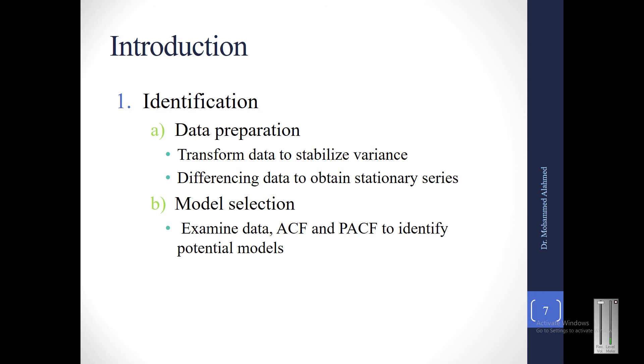First step, identification. That involves part A and B. First is data preparation. In that we basically transform the data to stabilize variance. As we know for a stationary time series, we have a constant mean and variance. Stabilizing variance means if it does not have a constant variance, we need to make it constant. Then differencing data to obtain stationary series.